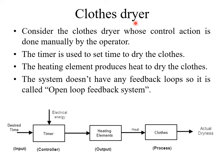Clothes dryer is used to dry wet clothes. In the block diagram of the clothes dryer, the desired time is set by the user with the help of a timer. This timer controls or operates the heating element. The heating element produces the heat required to dry the wet clothes. Electrical energy is needed for this operation. The actual dryness depends upon the time set by the user.